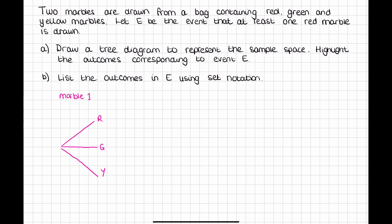Then from each of those we need another three branches because we could still pick out a red, a green, or a yellow marble from each of those.